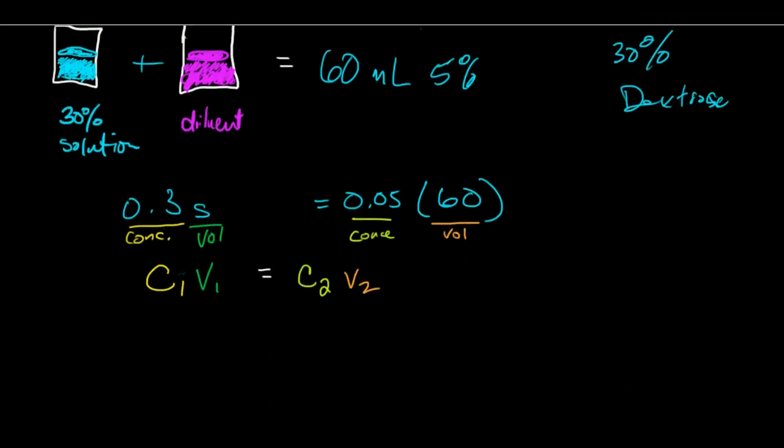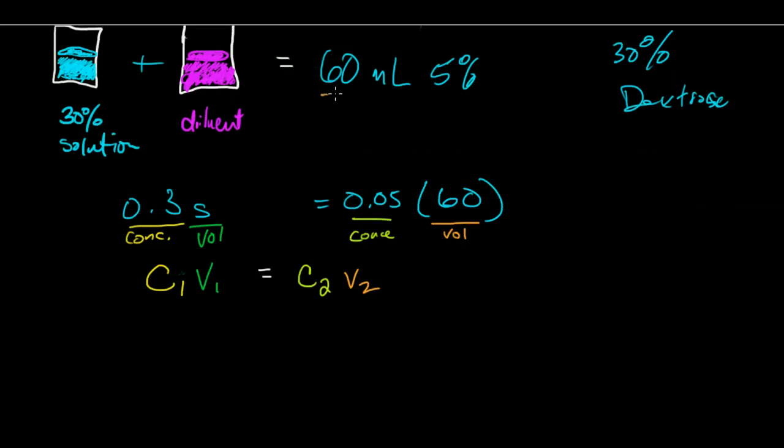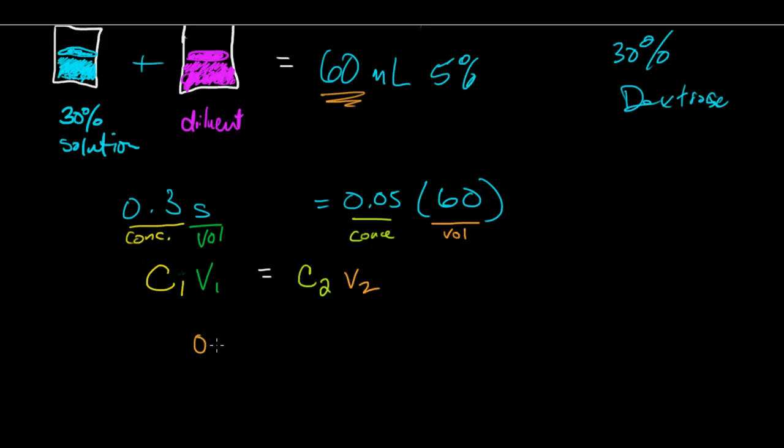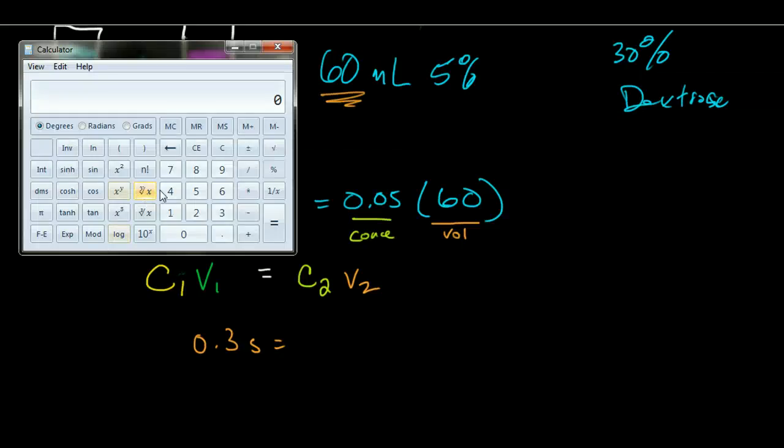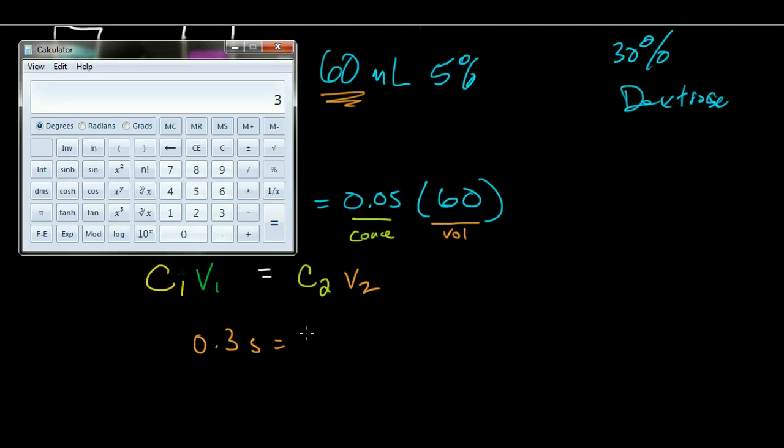Now that will give us how much of the solution we're going to use for the diluent. Here I want 60 milliliters so if my 0.3s is equal to my what's 0.05 of 60. My trusty calculator says that 0.05 times 60 is 3.